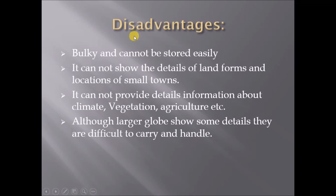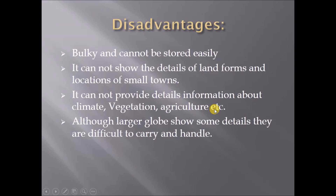What are the disadvantages of a globe? A globe is bulky and cannot be stored easily. It cannot show the details of landforms and the location of small towns. It cannot provide detailed information about climate, vegetation, agriculture, or nature. Although larger globes show some details, they are difficult to carry and handle.